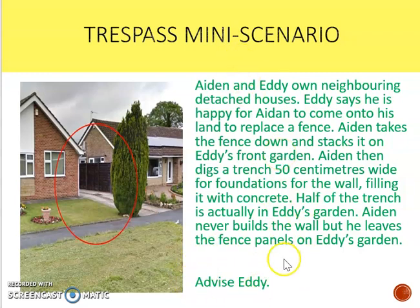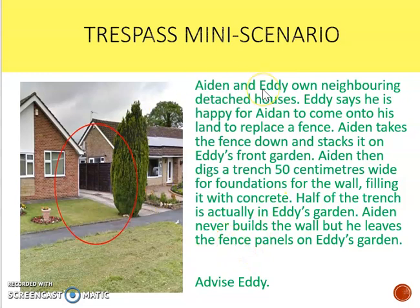Obviously this is trespass to land. The indications here are that there are things on the land and under the land, which is quite typical in trespass scenarios. You often see things flying over someone's property, trenches under the garden, and things hanging over fences — those are typical trespass to land scenarios.